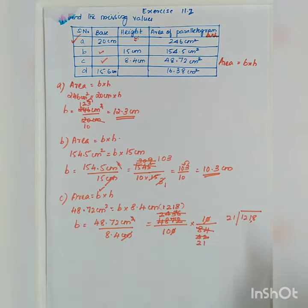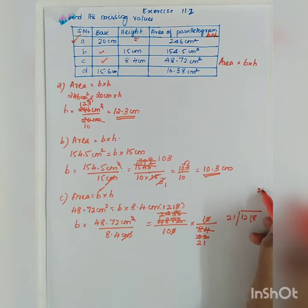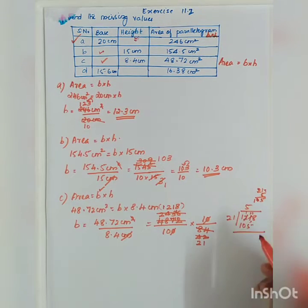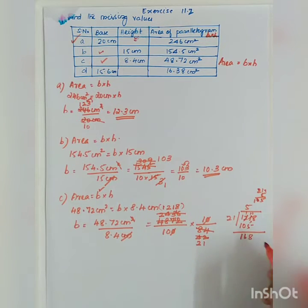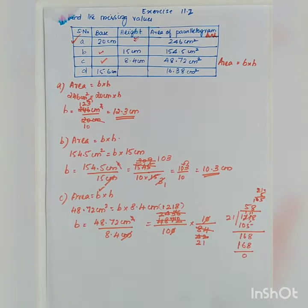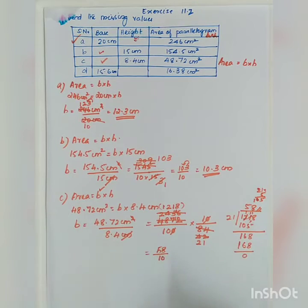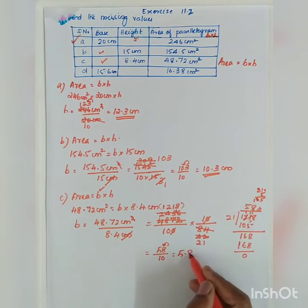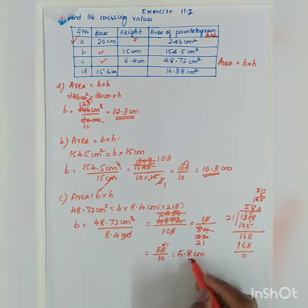Dividing 1218 by 21: taking 3 digits, 21 into 121 gives 5 with remainder 16, giving 105. The balance is 168, and 21 into 168 gives 8 with remainder 0. So the result is 58, but don't forget the 10 in the denominator — so 58 divided by 10 gives 5.8 centimeter.